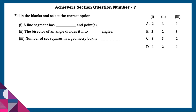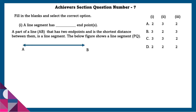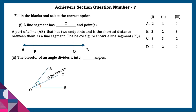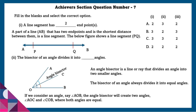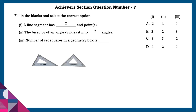Achiever section question number 7: Fill in the blanks and select the correct option. First: a line segment has two endpoints — a part of a line AB with two endpoints is the shortest length between them, so a line segment has two endpoints. Second: the bisector of an angle divides it into two equal angles. An angle bisector is a line or ray that divides an angle into two smaller equal angles; for angle AOB, it creates angles AOC and COB where both are equal. Third: the number of set squares in a geometry box is 2.